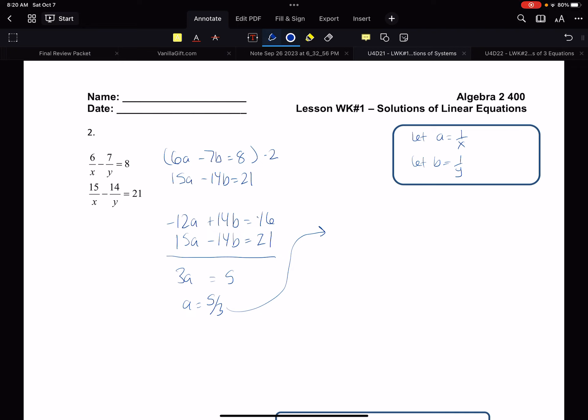6 times 5 thirds minus 7b equals 8. So I got 10 minus 7b equals 8. Negative 7b equals negative 2. B equals 2 over 7. So we got our answers. 5 thirds, 2 over 7.